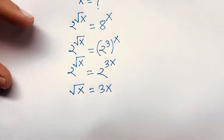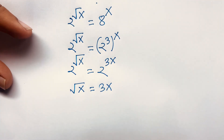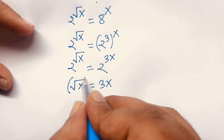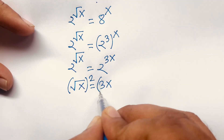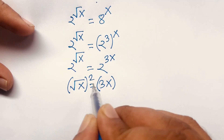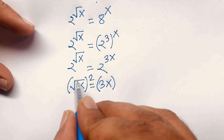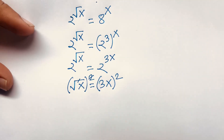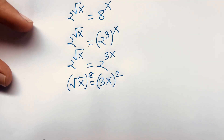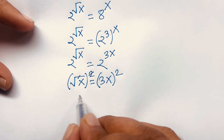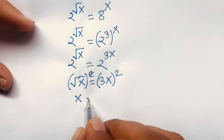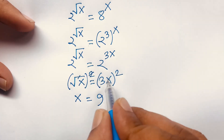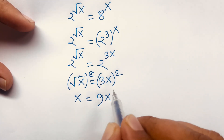Now, if I square both sides in order to remove the square root, the square root is cancelled and we find that x is equal to 3 squared, which is 9, times x squared.